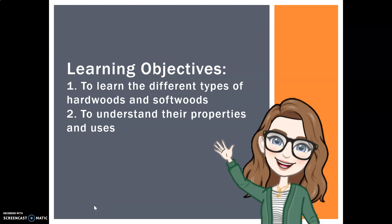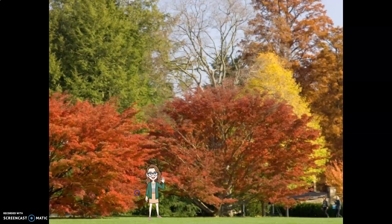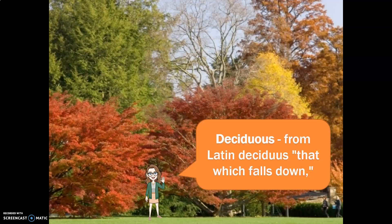I want to take you on a little journey first of all. Imagine you are walking through one of England's beautiful woodlands. During the summer you're likely to see these broad, sprawling, beautiful, strong trees, lush and green. During the autumn they're going to turn gorgeous golds and reds, and then in winter they lose their leaves. So these kinds of trees are called deciduous trees, from the Latin 'decidus', meaning 'that which falls down' — so meaning the leaves are falling.